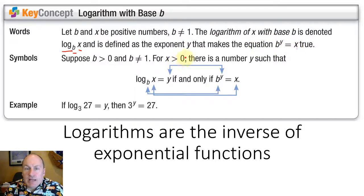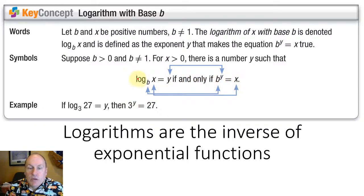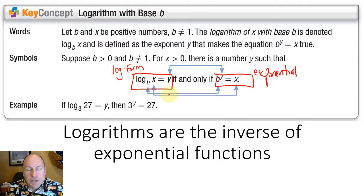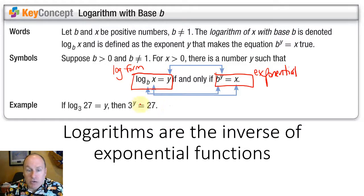For all positive x's, there is a number y such that log base b of x equals y if and only if b to the y equals x. The left-hand side is called the logarithmic form and the right is called the exponential form. Logarithms were invented to solve exponential equations, and today they're used for many other purposes such as creating models of things that behave in a logarithmic way.